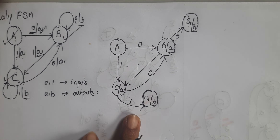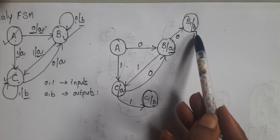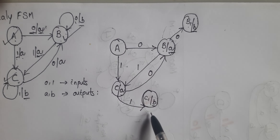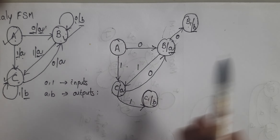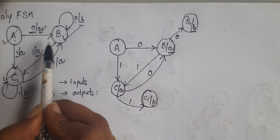This is the 3-state FSM, but the diagram is not complete. We have to create 2 extra states. So we have to draw the inputs and outputs for the extra states b1 and c1.